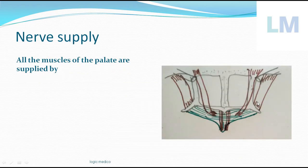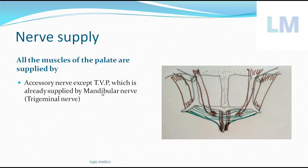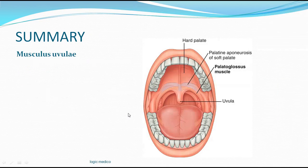Regarding nerve supply, all muscles of the palate are supplied by the cranial accessory nerve via the pharyngeal plexus, except the tensor veli palatini, which is supplied by the mandibular nerve — a branch of the trigeminal nerve.